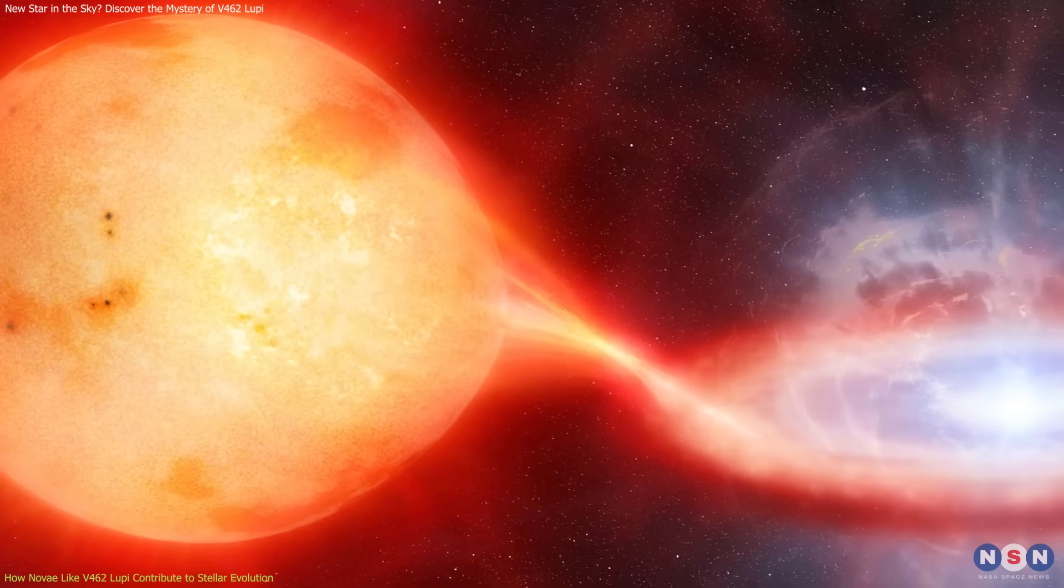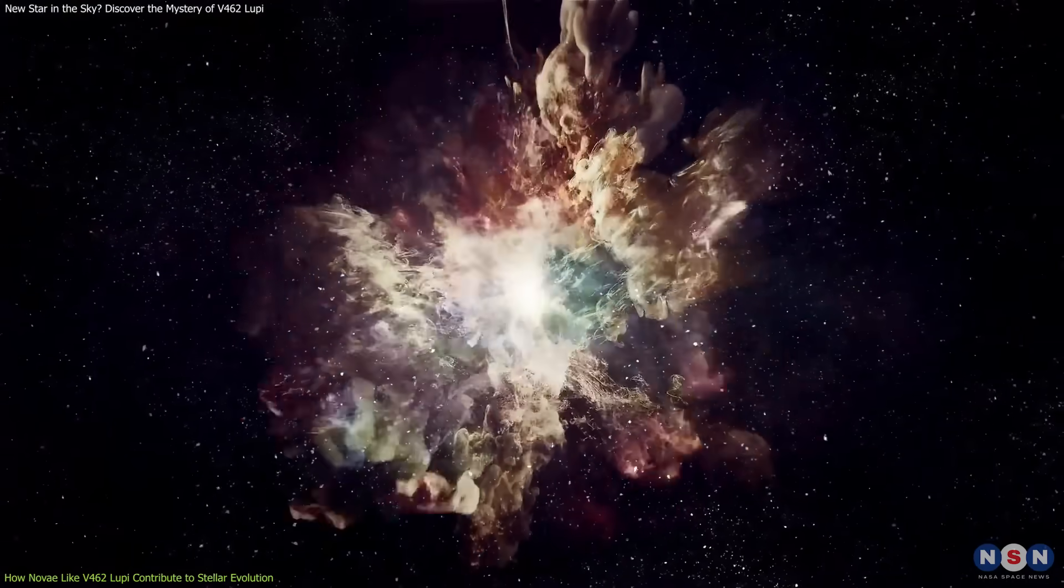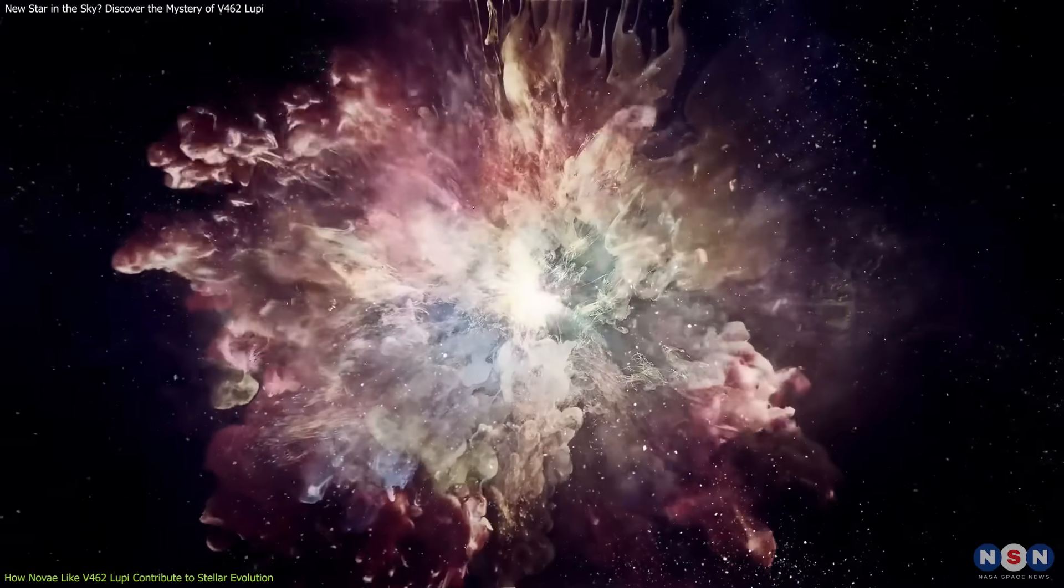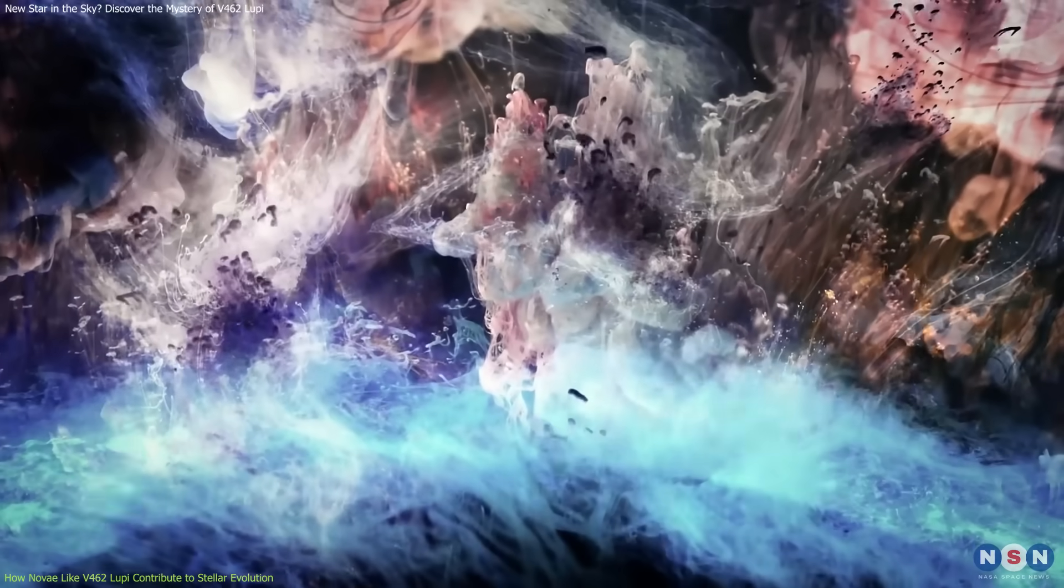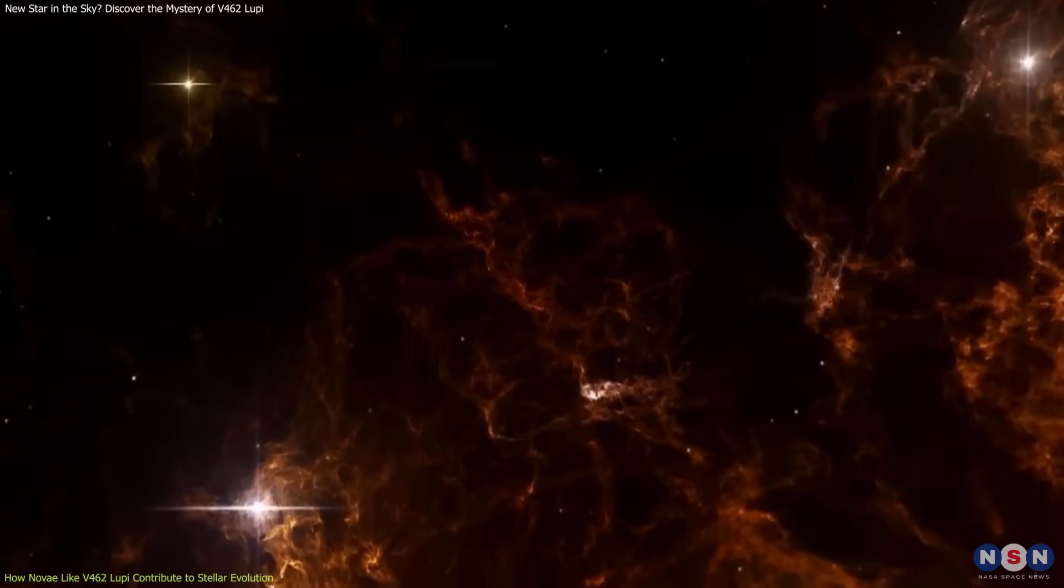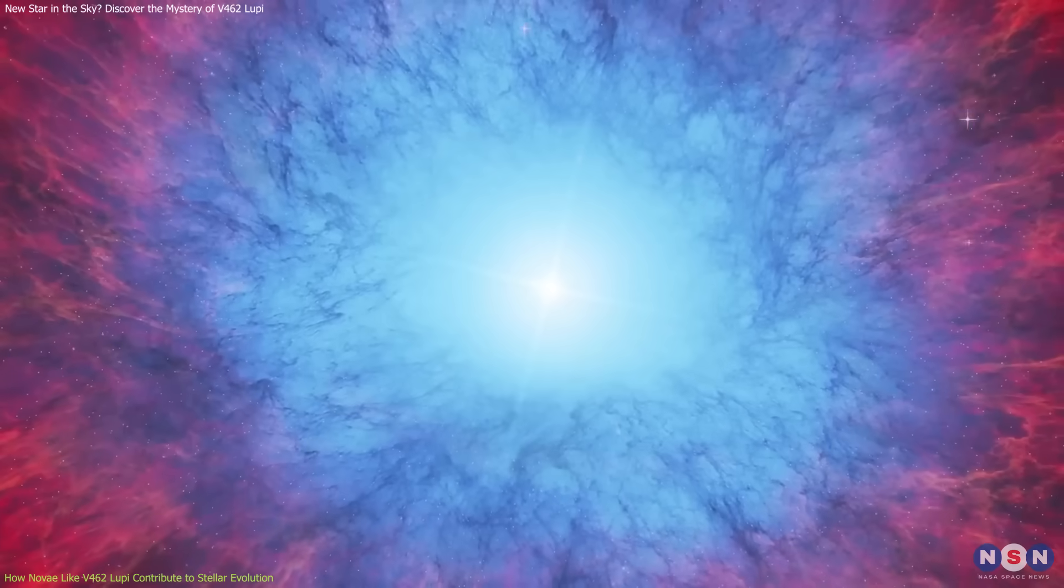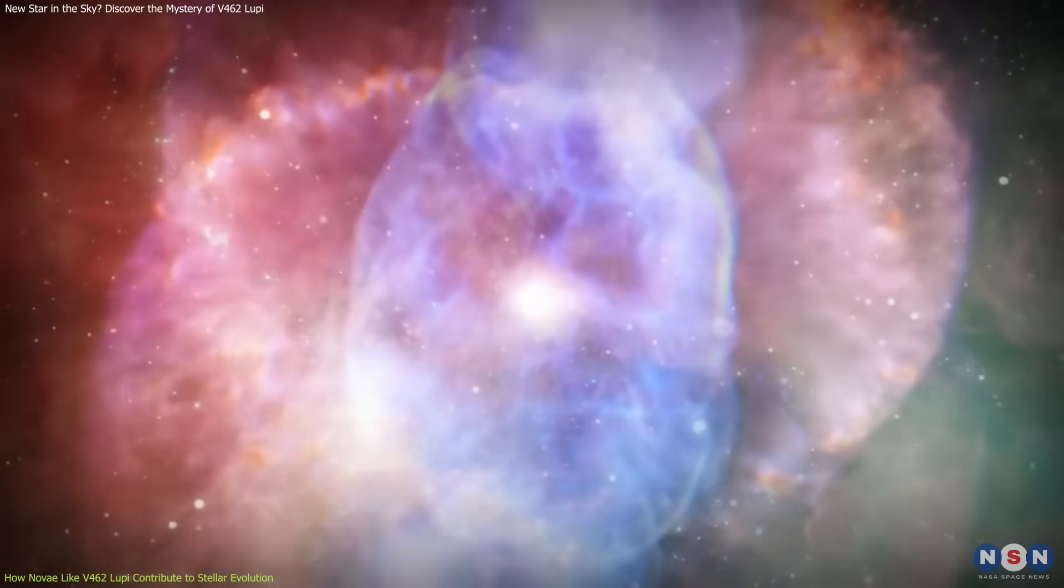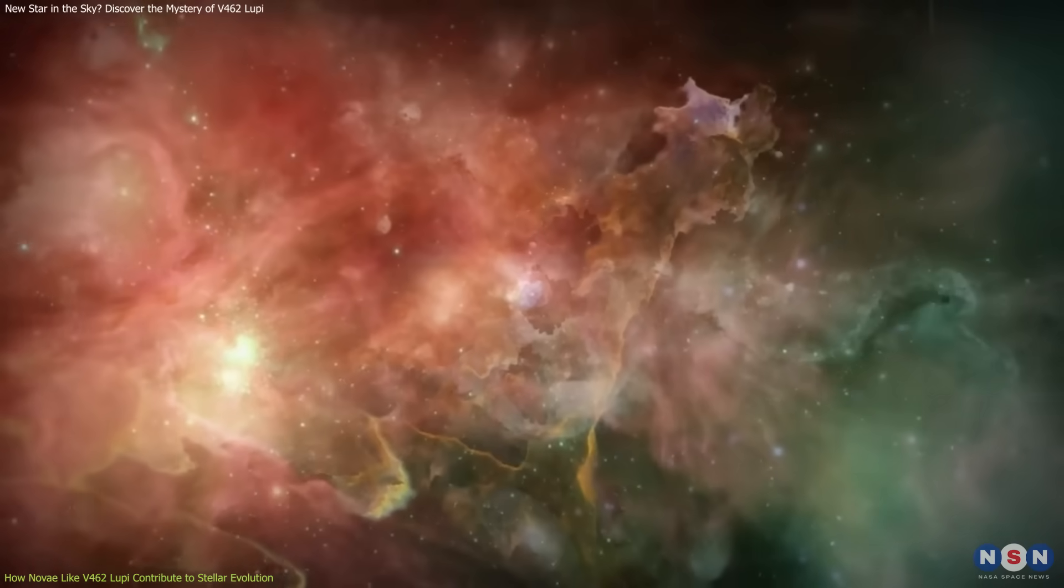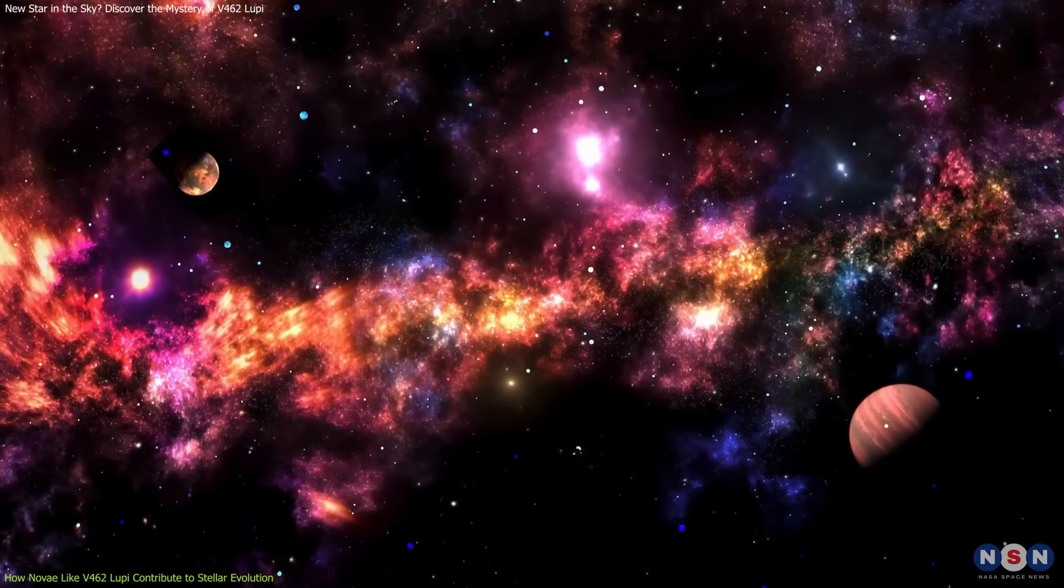Another important aspect of novae is their role in the chemical enrichment of the galaxy. When a nova erupts, it releases a variety of elements such as hydrogen, carbon, oxygen, and nitrogen into the interstellar medium. These elements are essential for the formation of new stars and planets. By studying the elements ejected during nova explosions, astronomers can learn more about how these elements are distributed throughout the galaxy and how they contribute to the formation of new celestial bodies.